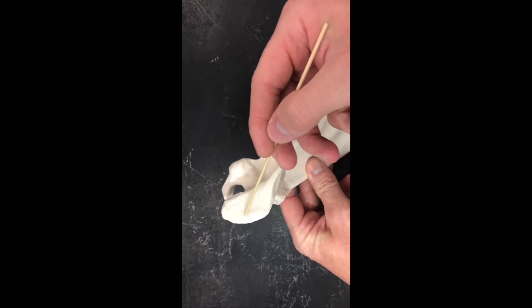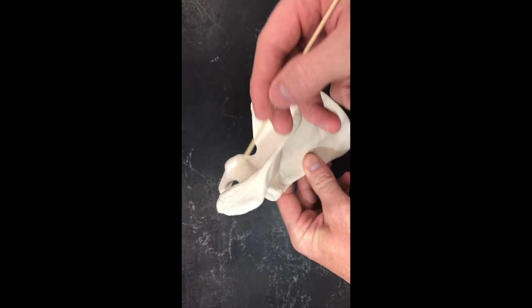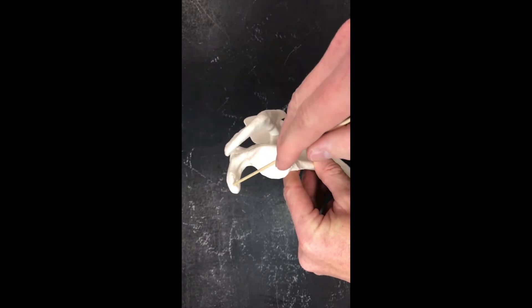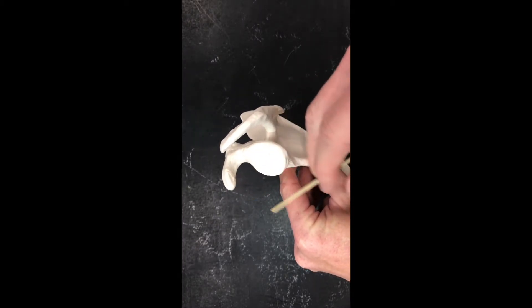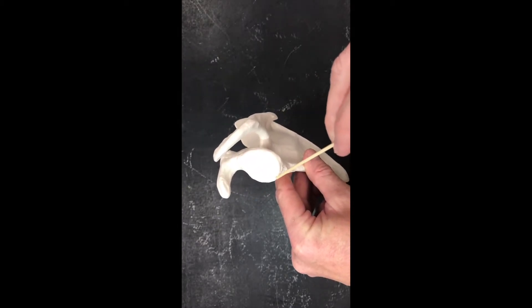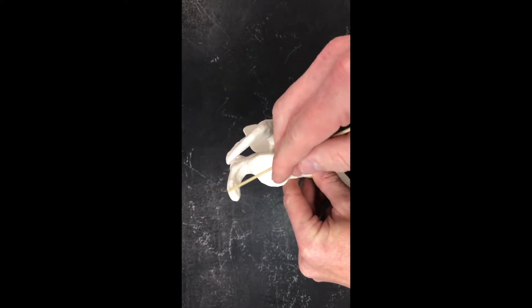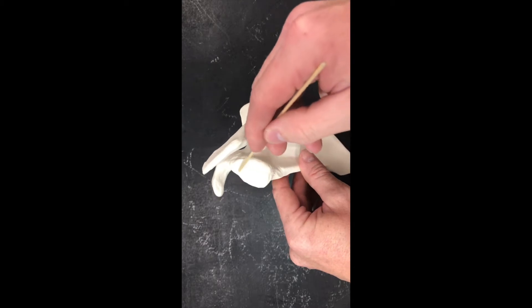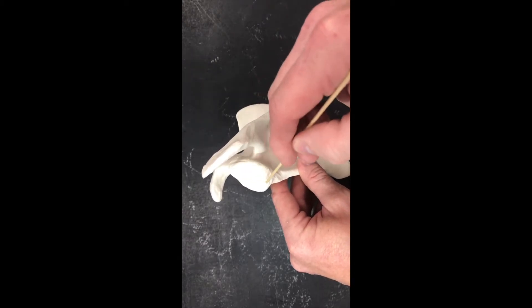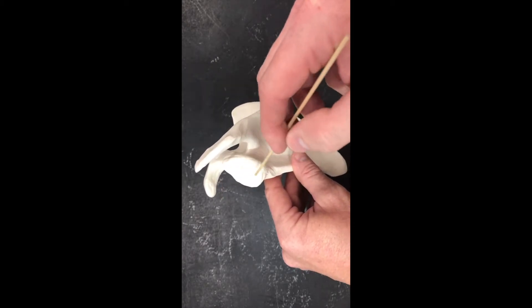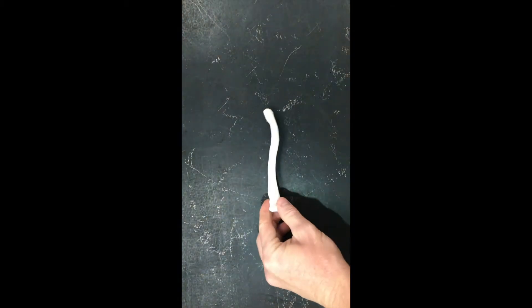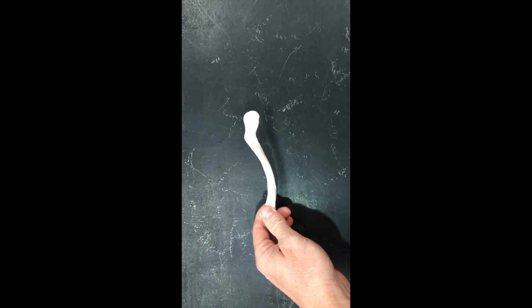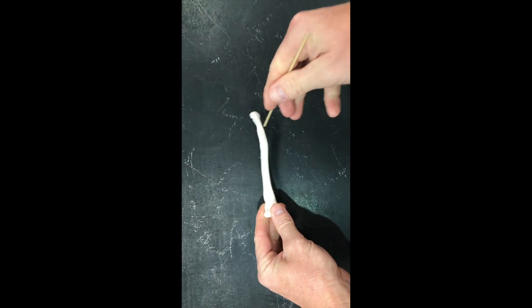The spine of the scapula eventually becomes the acromion process. On this side, we see the coracoid process — from the mandible we saw the coronoid process near the nose, and now the coracoid process is near the clavicle. The indented area where the humerus fits in is the glenoid cavity or glenoid fossa. The S-shaped bone here is the clavicle.